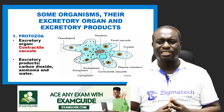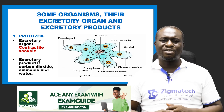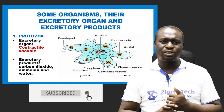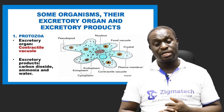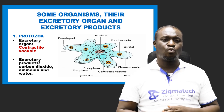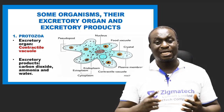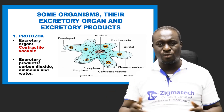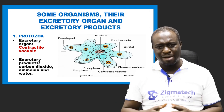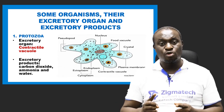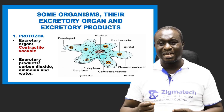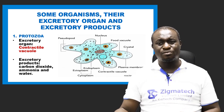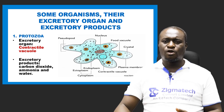The excretory products of protozoa include carbon dioxide, ammonia gas, and excess water. Excess water can also pose a threat to most organisms if too much accumulates — as explained earlier regarding water balance. Excess water can be removed through osmoregulation. We'll look at the mechanism of operation shortly.